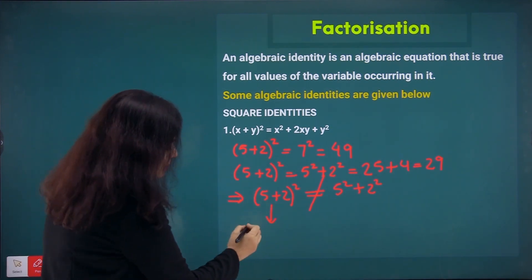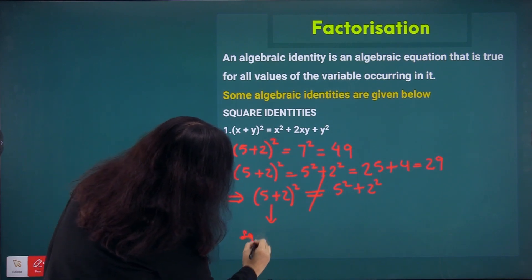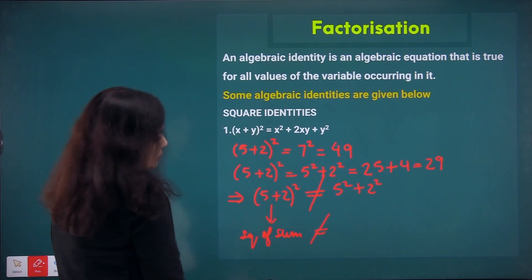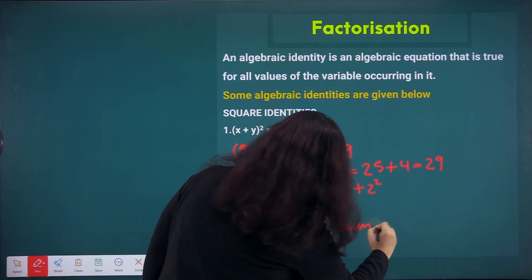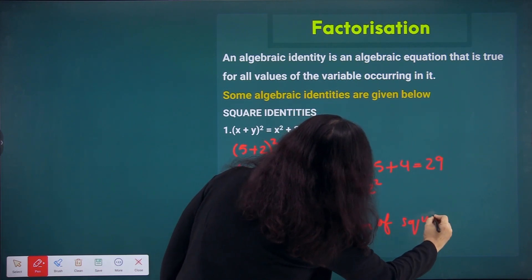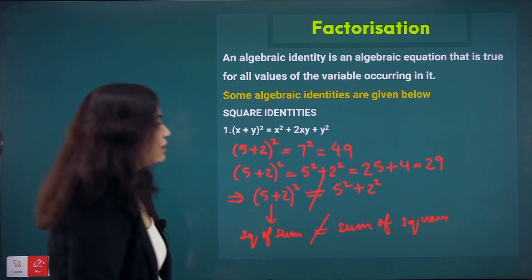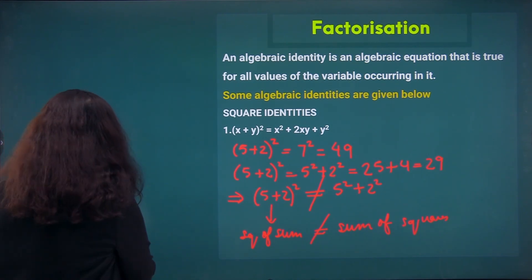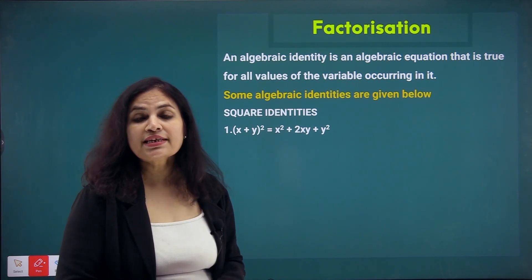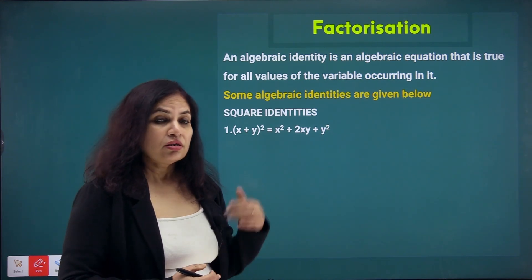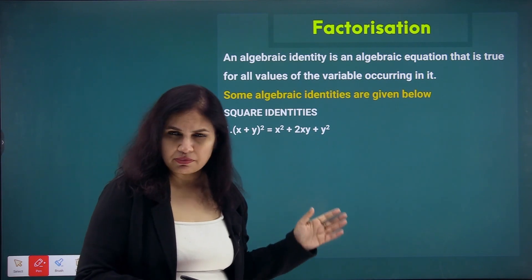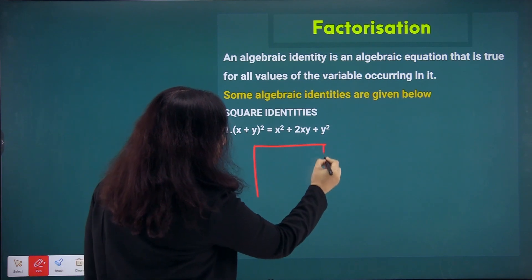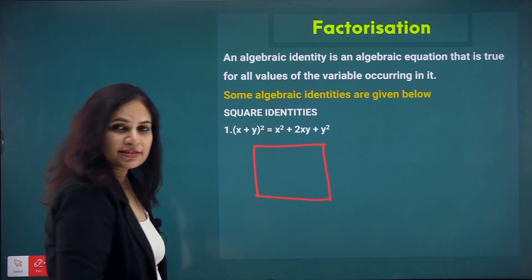This literally means the square of the sum of numbers is never equal to the sum of squares — they are not equal, but this is a common mistake which generally occurs. Let us try to understand the concept of the whole square using a very simple diagram, which will clarify this misconception.